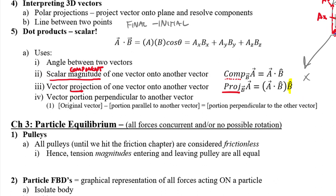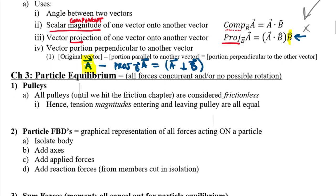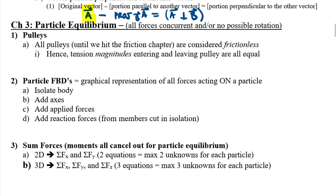We can also find the portion of one vector perpendicular to another. After finding the projection, we set up the vector equation: vector A minus the projection of A relative to B equals the component of A perpendicular to B. The parallel and perpendicular components of A add back together to give the full vector A. Next we moved into particle equilibrium, where we assume all forces are concurrent — going to the same point — so we don't need to worry about moments.